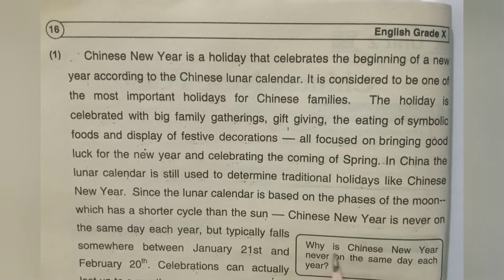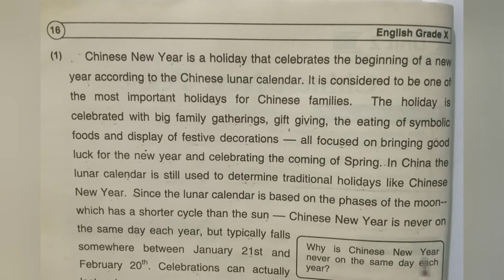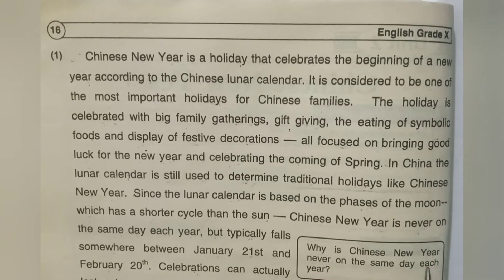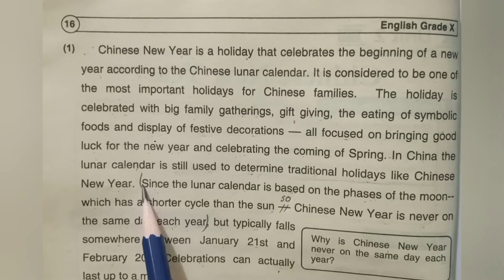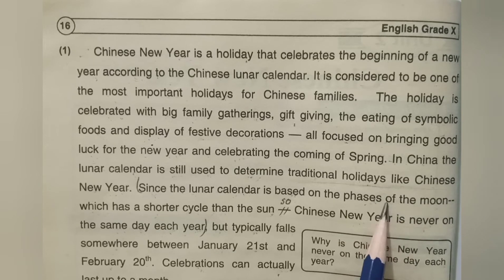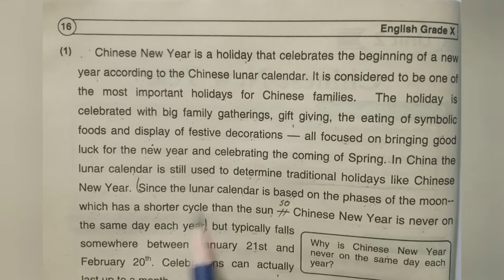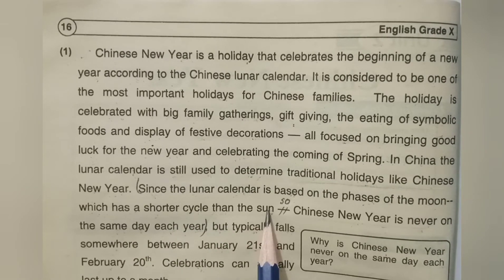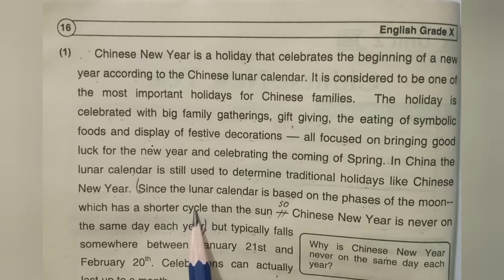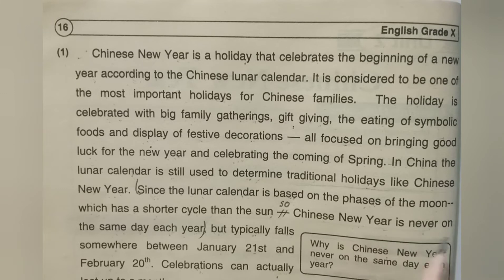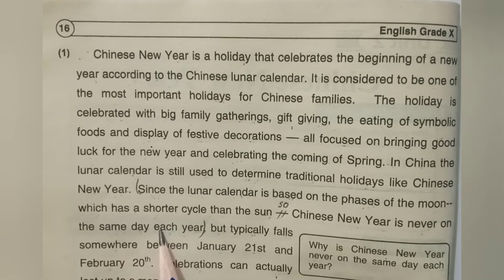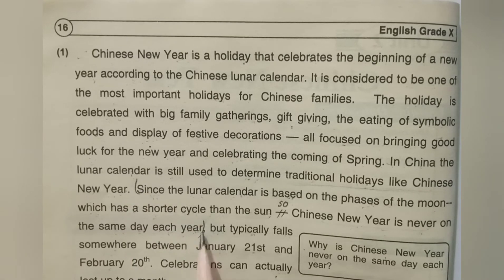Here we have a question in the box: Why is Chinese New Year never on the same day each year? — Chini saale no har saal ek hi din kyun nahin aata? The answer: Since the lunar calendar is based on the phases of the moon, which has a shorter cycle than the sun, so Chinese New Year is never on the same day each year.